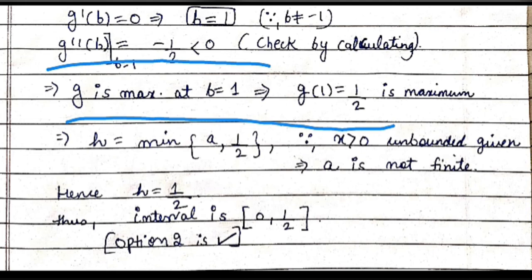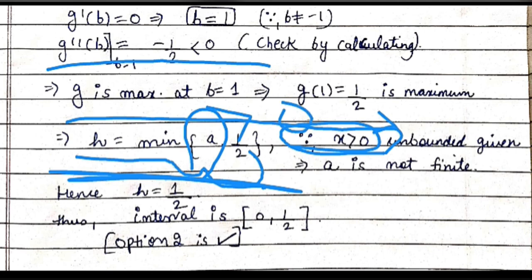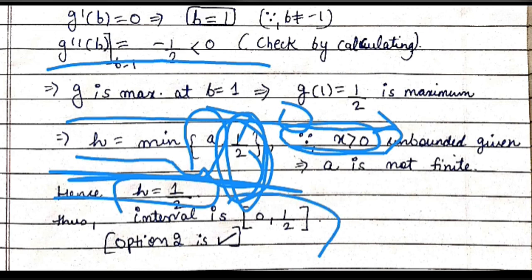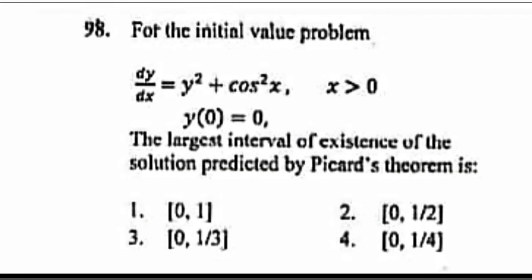So g is maximum at b = 1 and the maximum value is 1/2. The interval h = min(a, 1/2). In the question, x > 0, meaning x is unbounded, so a → ∞. Therefore h = min(∞, 1/2) = 1/2. The largest interval of existence is (0, 1/2], making the second option correct.